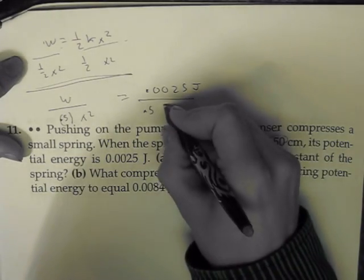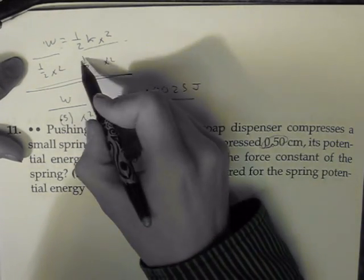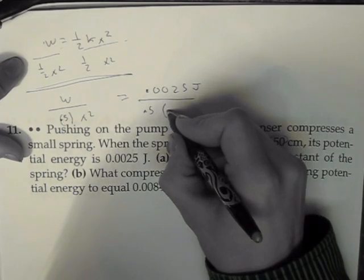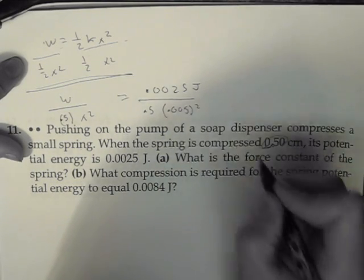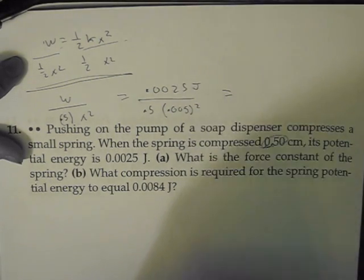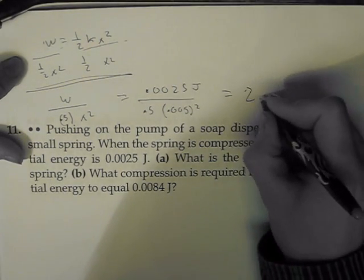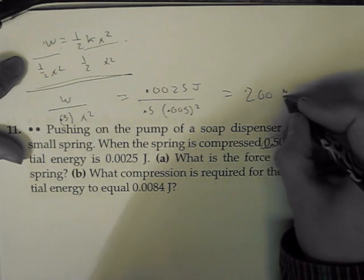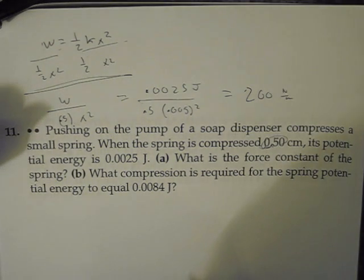So you would multiply the 0.5—this 0.5 is just this one half right here—but this 0.005 squared is the distance. So if you put that into your calculator, you're going to get 200 newtons per meter. And that's part A.